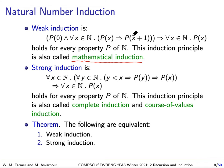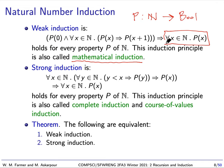Weak induction is an induction principle for the natural numbers. We have a property — a predicate that takes a natural number and gives back a Boolean value. We want a principle that tells us when this predicate holds for all natural numbers. There are two things to show: first, that the property holds at the base case, which is zero; and second, that if we know the property holds at x, then the property will hold at x plus 1, for all x. If we know it holds at zero, and whenever it holds at x it holds at x plus 1, then we conclude it holds for all natural numbers.